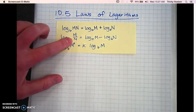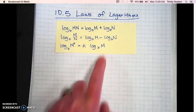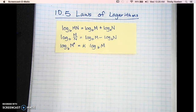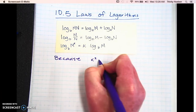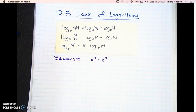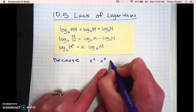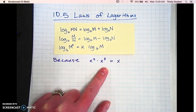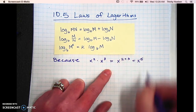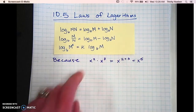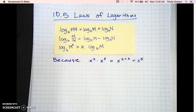Then you have M over N, which is basically division. When you go to expand it, you're going to separate it into subtraction. The reason is that logarithms are the inverse operation of exponents. So if you have X squared times X cubed, that equals X to the fifth because you add the two and three. That's why when you expand a product you add, and when you expand a quotient you subtract.